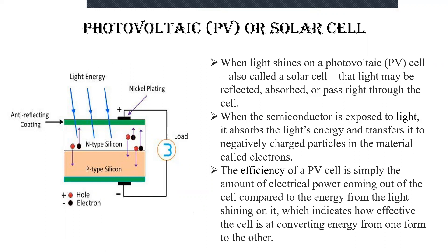When the sun is shining, or when light falls on this photovoltaic cell — which is also called a solar cell — the light may be absorbed. At one end it is absorbed, at the other end it is reflected. When it is absorbed, it is passed right through this cell, that is the N-type and P-type layers.